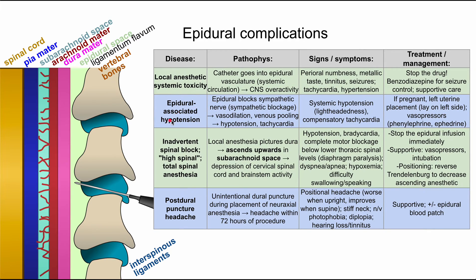Next is epidural-associated hypotension. The epidural blocks the sympathetic nerves, causing vasodilation and venous pooling, which results in hypotension and tachycardia. Signs and symptoms include hypotension — in contrast to local anesthetic systemic toxicity, which causes hypertension — lightheadedness, and compensatory tachycardia. Management includes laying the pregnant patient on their left side to relieve pressure on the great vessels, and administering vasopressors such as phenylephrine or epinephrine.